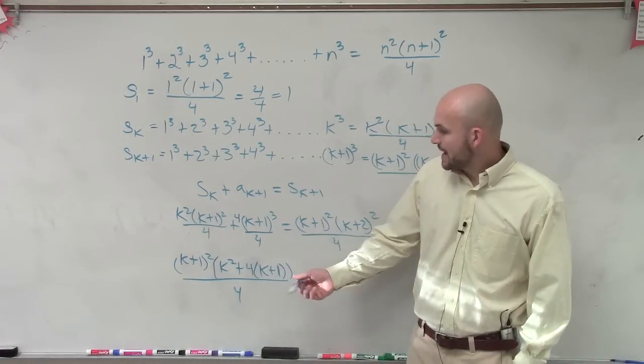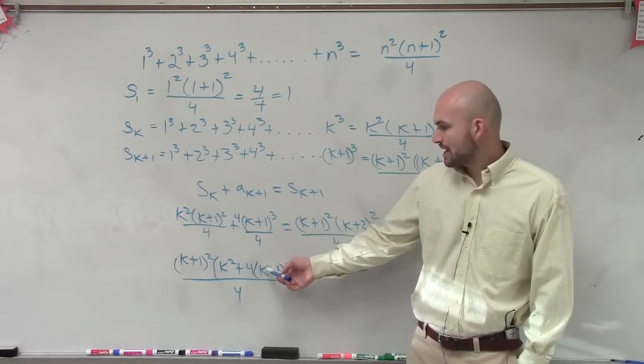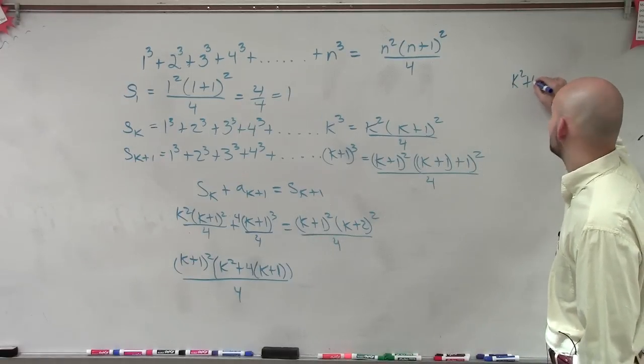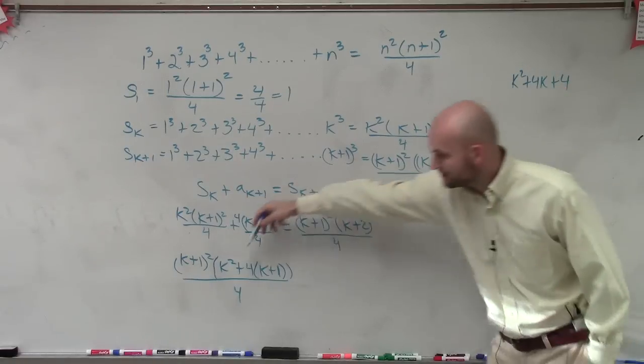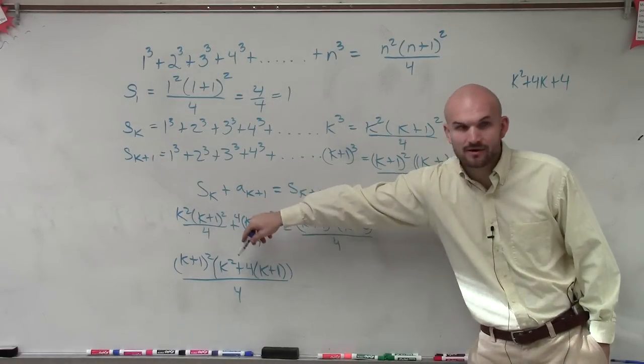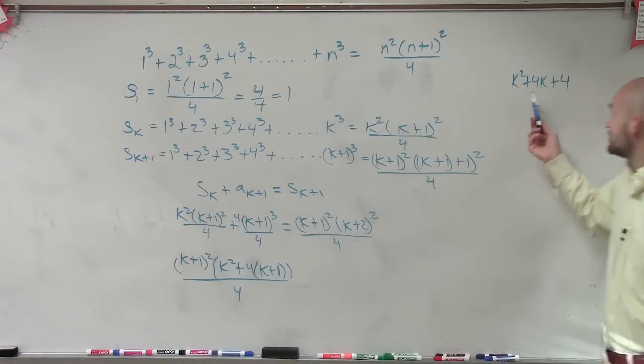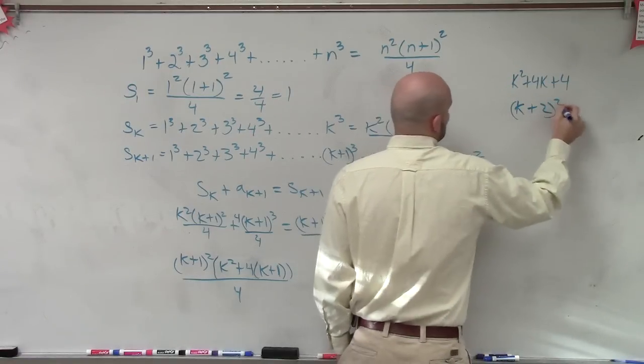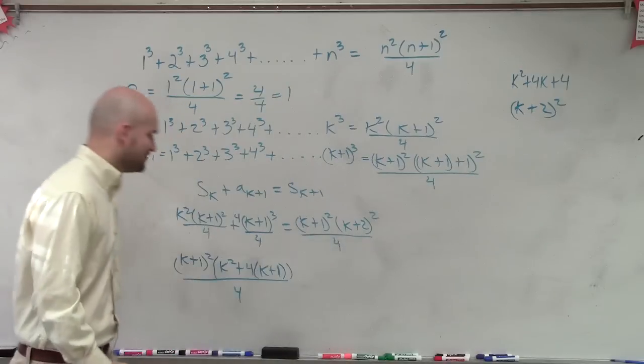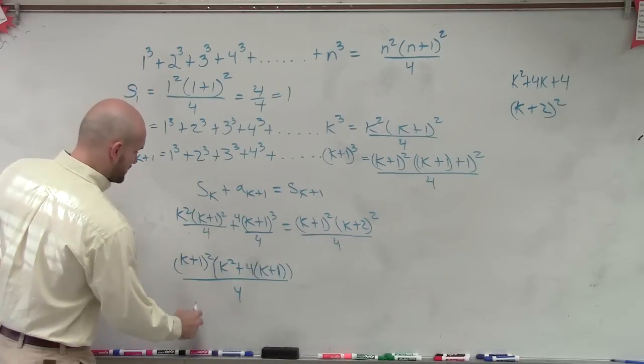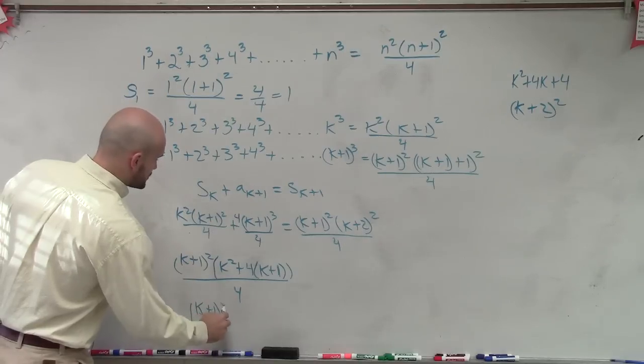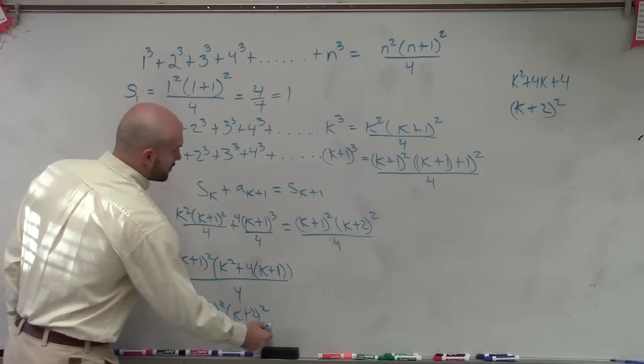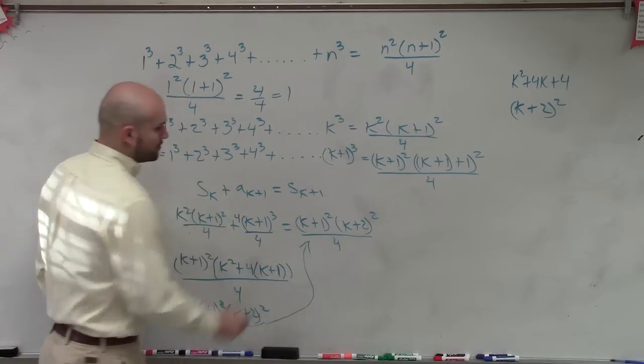So now I can distribute this. If I distribute this to 4k and 4, then I have a trinomial that looks like this: k² + 4k + 4, right? When I simplify that out, and then I look at this, and I say, can I factor k² + 4k + 4? (k+2)². That's kind of what I need, right? So that ends up being (k+1)²(k+2)²/4, which we have is right over there.